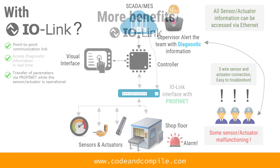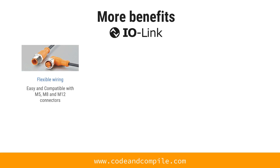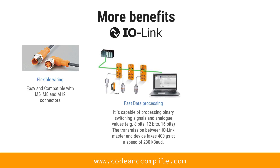Now let's look at more benefits of IO-Link. The first benefit is flexible wiring — you can easily connect your IO-Link sensors and actuators via M5, M8, and M12 connectors. Second, you have fast data processing: it is capable of processing 8-bit, 12-bit, and 16-bit data in just 400 microseconds.